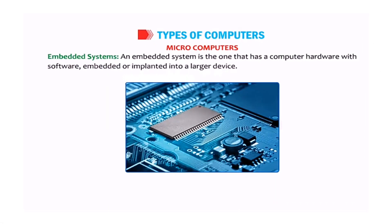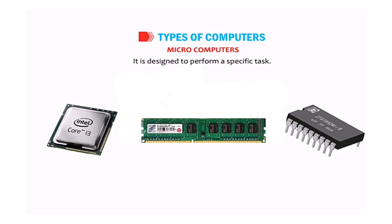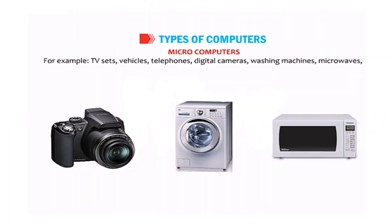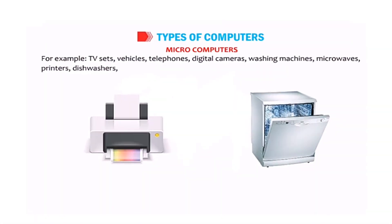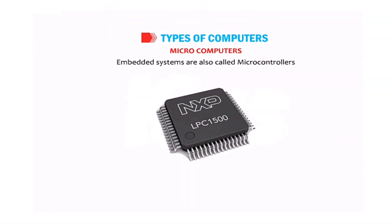An embedded system is one that is computer hardware with software embedded or implanted into a larger device. It has almost all important computer components like CPU, RAM, and ROM with input and output mediums, but does not have a disk drive, keyboard, or screen. It is basically designed to perform a specific task. Examples include TV sets, vehicles, telephones, digital cameras, washing machines, microwaves, printers, and dishwashers. Embedded systems are also called microcontrollers.